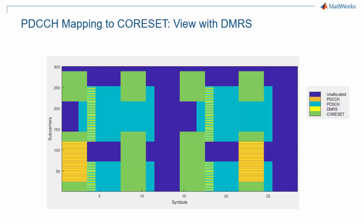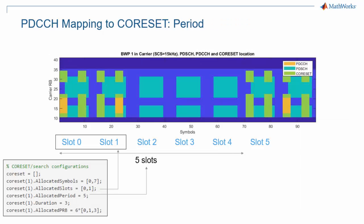We will look at DMRS in detail in another episode of this 5G Explained series. On this final view of the core set, we can see the periodicity: slots 0 and 1 are assigned, and the core set then repeats every 5 slots, as specified by the period.